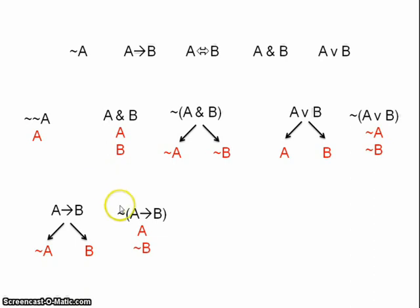Negated conditional. Well, obviously, the only time a conditional is false is when the antecedent is true and the consequent is false. So, if we see not if A then B, then we can derive both A and not B.